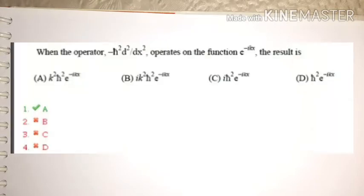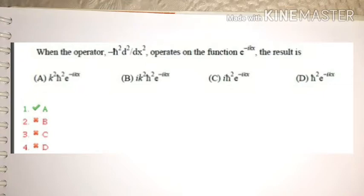Let's start. The first question says: when the operator minus ℏ² d²/dx² operates on the function e to the power minus ikx, the result is — and you have four options. The operator is given and the function is given; you need to find what result comes from operating on e^(-ikx).